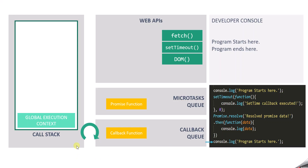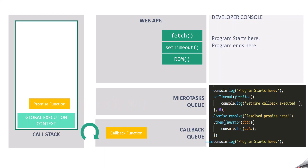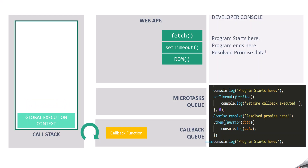The event loop pushes the promise callback function to the call stack for execution. Inside this callback function, we are logging the data which the resolved promise returned — and it has returned this text, so this text will be logged in the developer console. Once the execution of this callback function is complete, it pops off the execution stack. Now the microtask queue is empty, so the callback functions of the callback queue will be executed one by one.